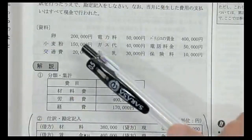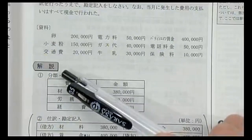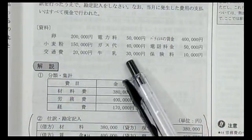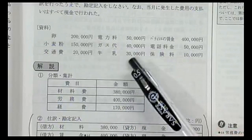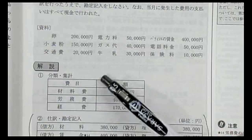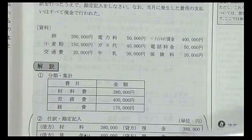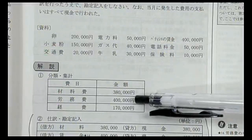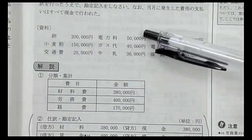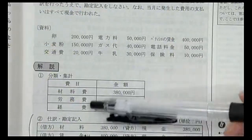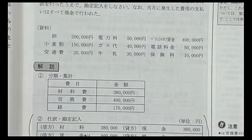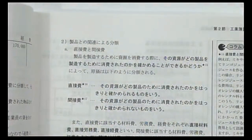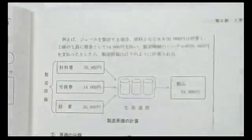具体例として、パン工場L社の費用を材料費・労務費・経費に分類します。卵20万円・牛乳15万円・小麦粉3万円の合計38万円が材料費、パティシエの賃金40万円が労務費、電力・ガス代・交通費・保険料・電話料金などの合計17万円が経費です。